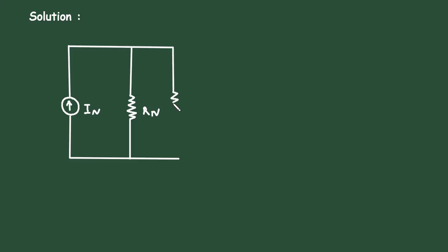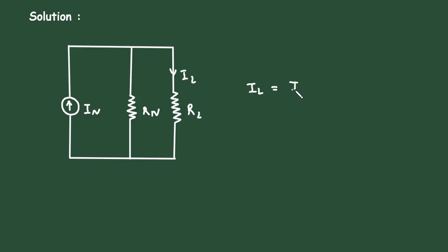Here, this will be the load resistor Rl. Now suppose we have to find the value of IL. So IL is equal to — according to the current division rule — In multiplied by Rn, divided by Rn plus Rl.